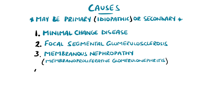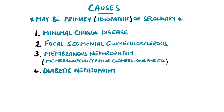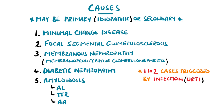Another potential cause is diabetic nephropathy, which initially begins as microalbuminuria, and in some cases progresses to significant proteinuria and nephrotic syndrome. There is also amyloidosis, which is the deposition and accumulation of abnormal protein known as amyloid within tissues. Examples include amyloid light-chain amyloidosis, transthyretin amyloidosis, which is hereditary, and serum amyloid A amyloidosis. Overall, one in two cases are thought to be triggered by infections, particularly upper respiratory tract infections, and one in three from allergic reactions.